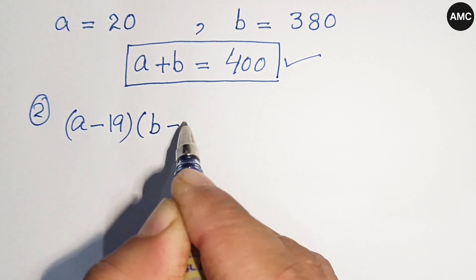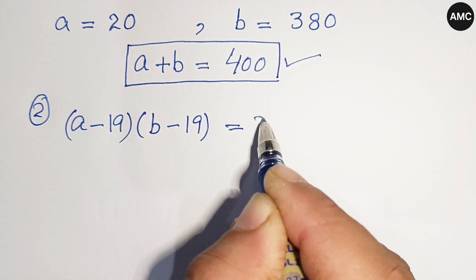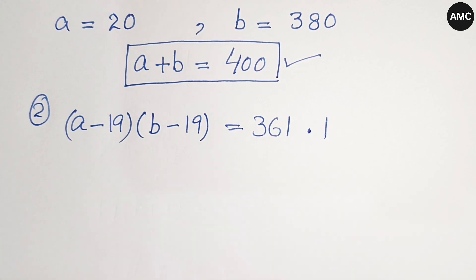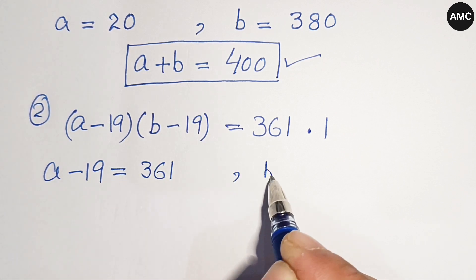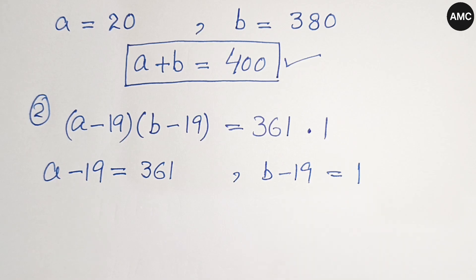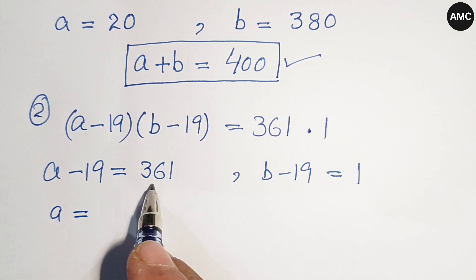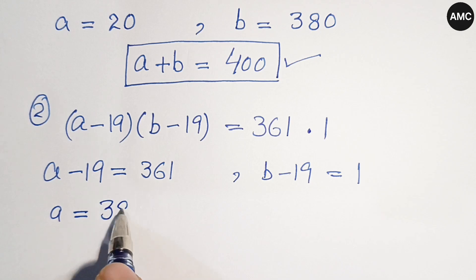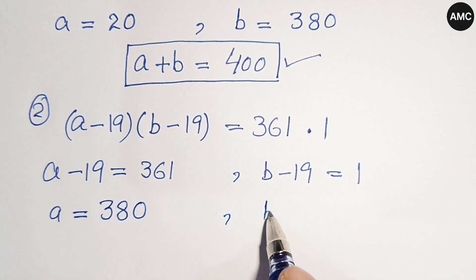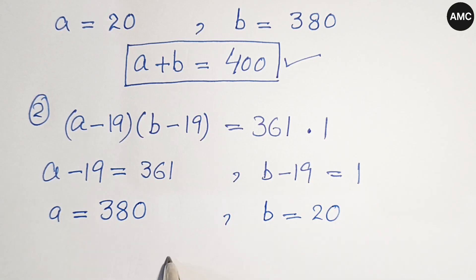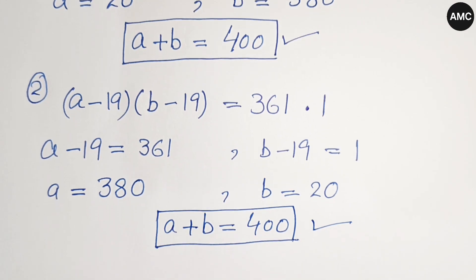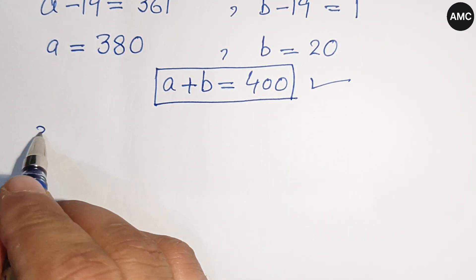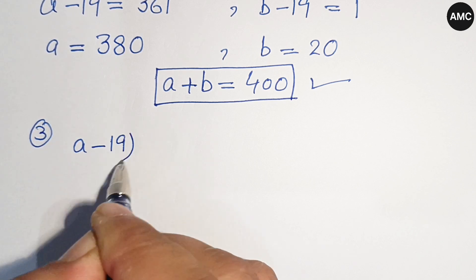From case 2, (a minus 19)(b minus 19) equals 361 times 1, so a minus 19 equals 361 and b minus 19 equals 1. This gives a equals 380 and b equals 20, so a plus b equals 400 — the same answer as case 1.